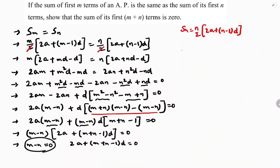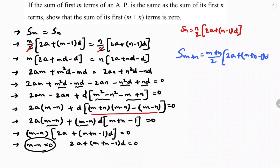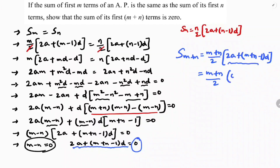Now find S of m plus n — the sum of m plus n terms. Substituting m plus n in place of n in the formula: m plus n by 2 into 2A plus m plus n minus 1 into D. If you observe, 2A plus m plus n minus 1 into D has value zero from our earlier result. So m plus n by 2 into 0 equals 0. Therefore, the sum of m plus n terms is zero.